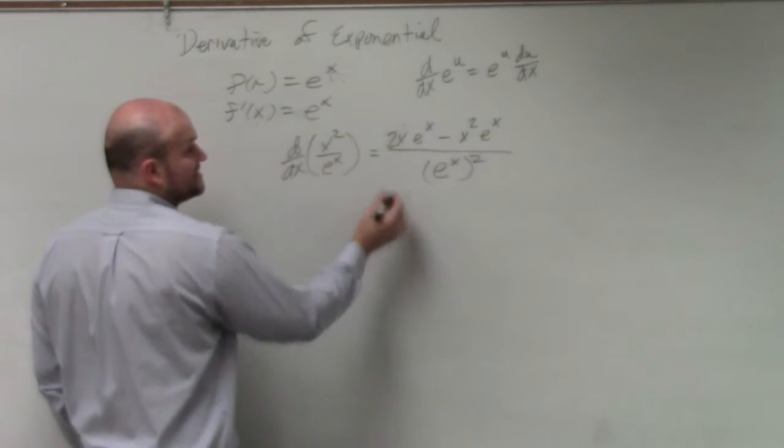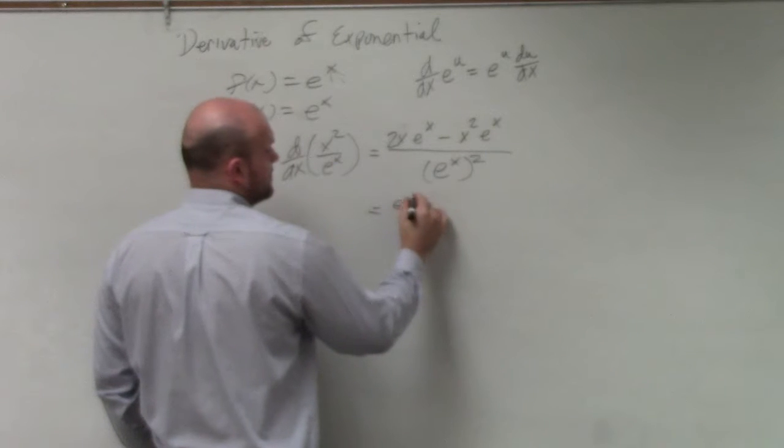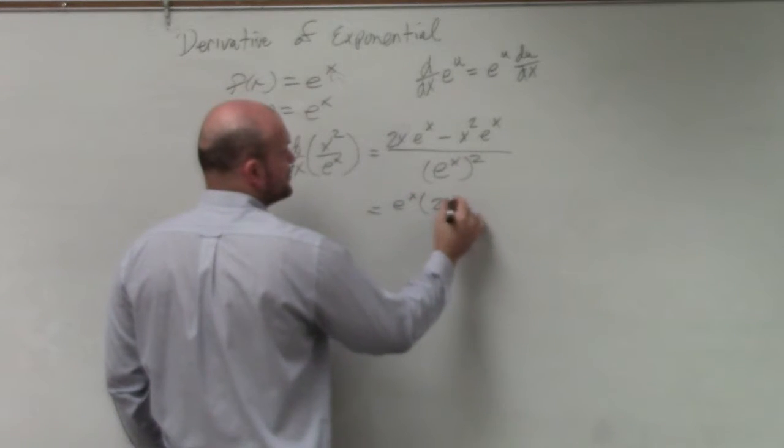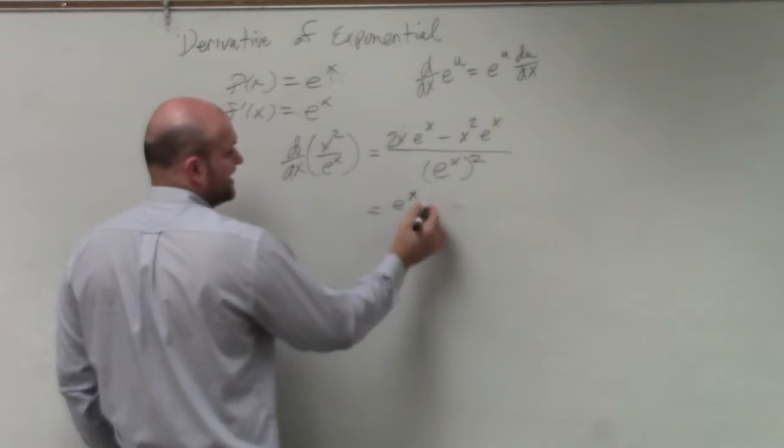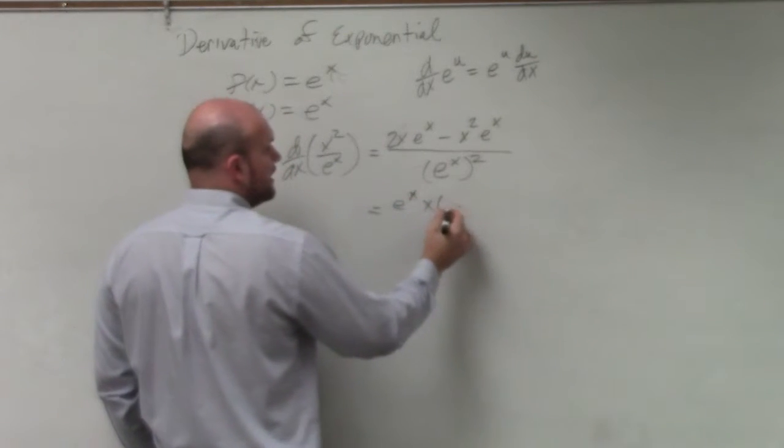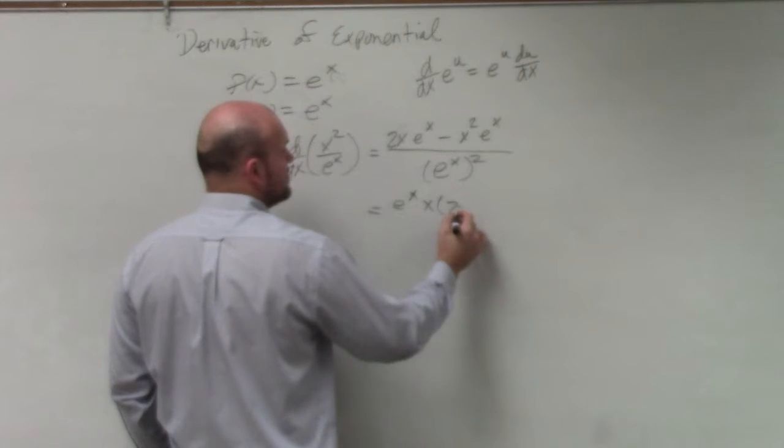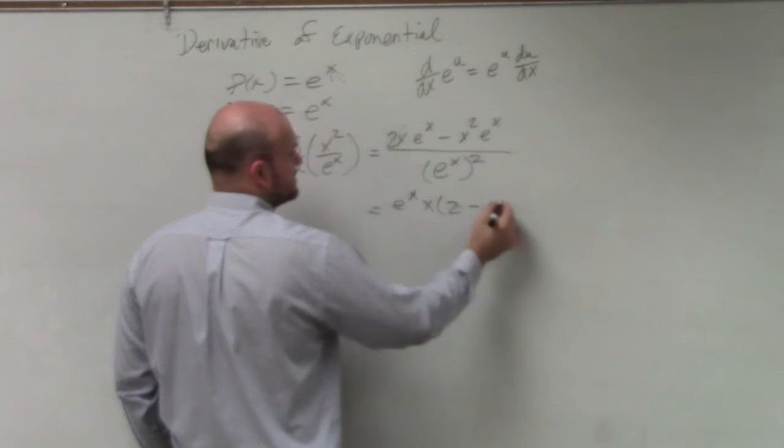Now in this case, I can factor out an e to the x. And I could do 2x. Actually, I could factor out e to the x. Then again, another x, right? And that'd be left with a 2 minus x.